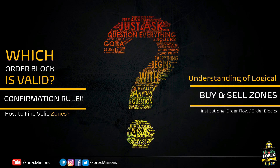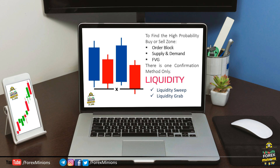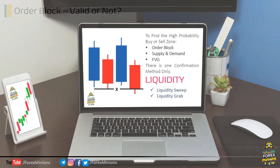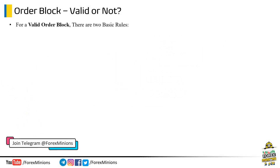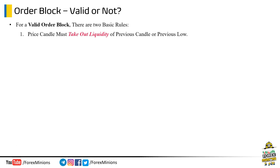Now, if you are a Forex trader, you may have noticed that sometimes price does not respect order blocks. Why does this happen? Because every order block is not valid. Then the question is: which order block is actually valid? There are some confirmation rules for valid order blocks. As discussed, to confirm an order block there is a confirmation rule, which is liquidity — market must take out liquidity to validate an order block. We can confirm a valid order block by two rules: First, the price candle must take out the liquidity of the previous candle or previous low. Second, the price candle must create a price imbalance or fair value gap zone.